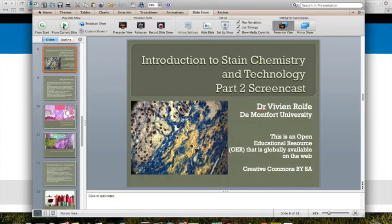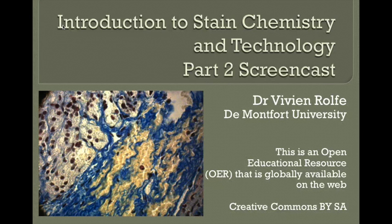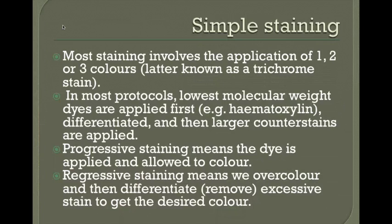This is our second screencast on stain chemistry and technologies. Most histological stains apply one, two, or three colours — three-colour stains are known as trichrome stains and give lovely visual representations of cells and tissues. In most protocols, the lowest molecular weight dyes are applied first, as they can penetrate the nuclear membrane and stain the nuclei.